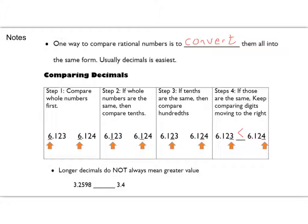Here's the thing: longer decimals are not always greater. It's tempting to look at a big long number and think it has to be greater. But if you compare digit by digit, they might both have threes, but the next digit might be a 2 versus a 4 — and that 4 makes that number greater. Go ahead and move on to the next page.